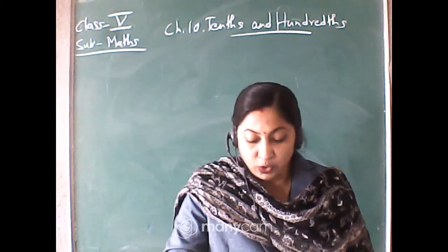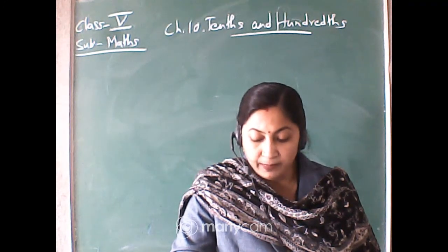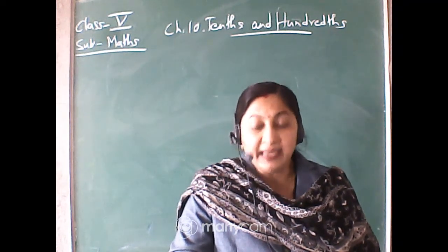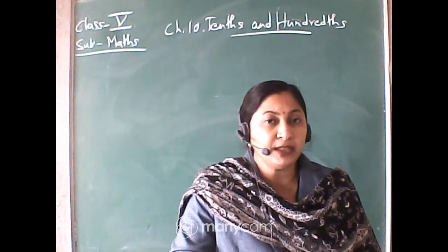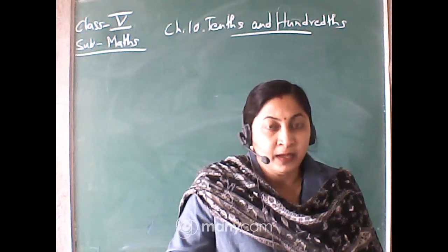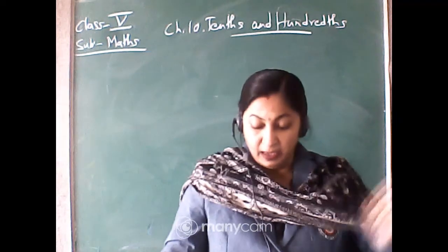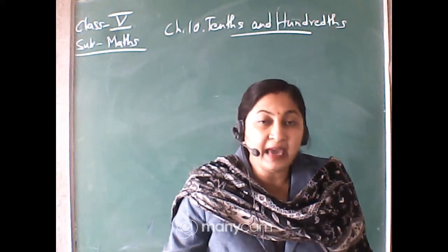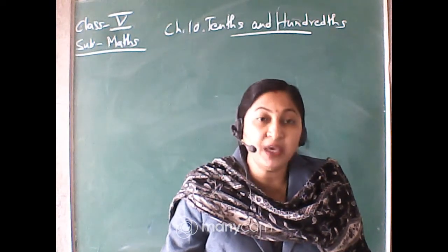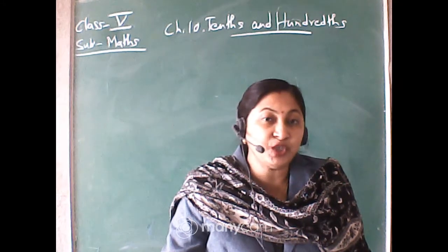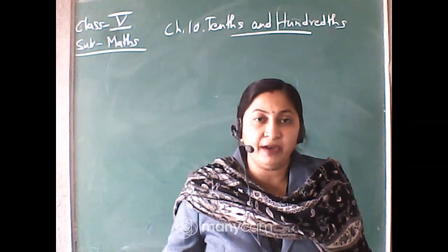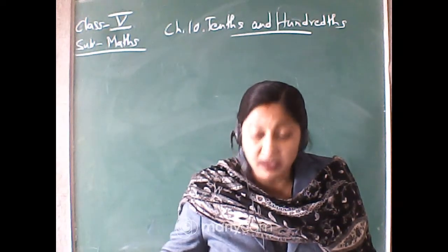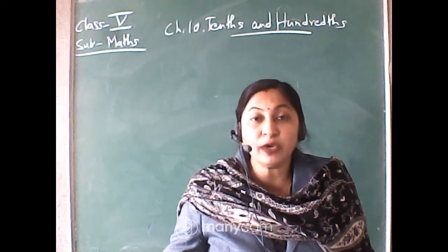Now the next topic: Our Eyes Get Confused. Which line is longer, A or B? Measure each line and write how long it is in centimeters — how good is your guess? Looking at the two lines, you will say that line B is longer than line A, isn't it? But actually, both line A and line B are of the same measurement — they are equal.